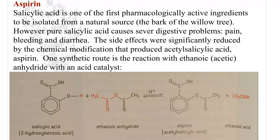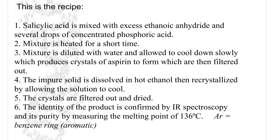To synthesize acetylsalicylic acid, we can use ethanoic anhydride, and this is something we would have done in the lab. In the reaction between salicylic acid and ethanoic anhydride, you get your product — acetylsalicylic acid or aspirin — and you get a byproduct of ethanoic acid. This is the procedure we would have followed. In step two, the mixture is heated for a short time under reflux.